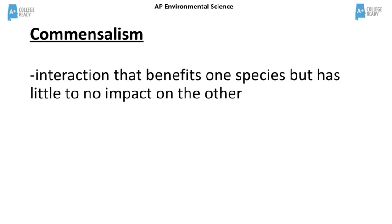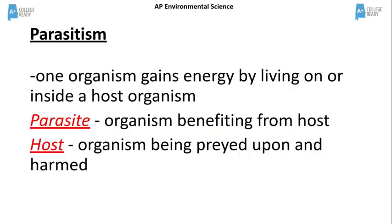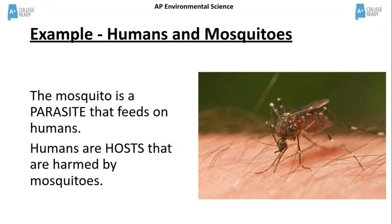Commensalism occurs when one species benefits but has little to no impact on the other species. An example is the cattle egret and the cow — the bird benefits by eating insects on the cow or insects stirred up as the cow walks through the grass, while the cows are unaffected by the birds. Parasitism is the symbiotic relationship in which one organism feeds on another. The parasite benefits and the host is harmed. An example is humans and mosquitoes — the mosquito feeds on human blood, and humans are the hosts that are harmed.